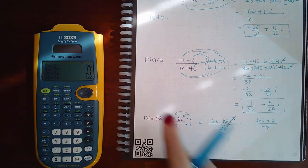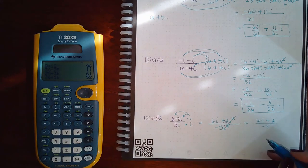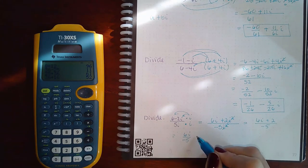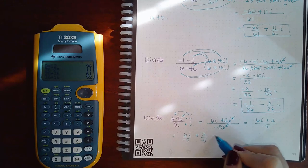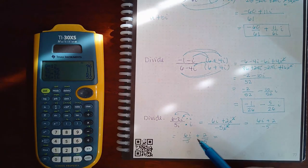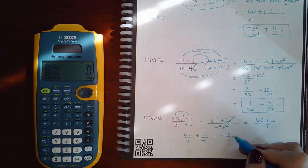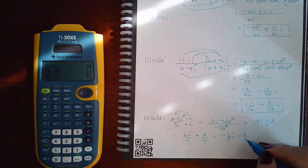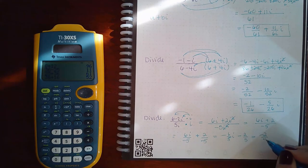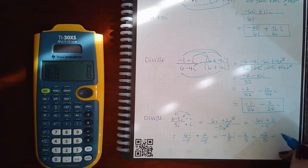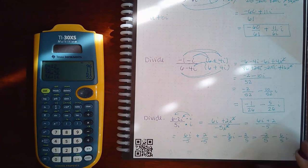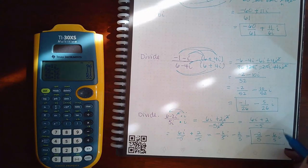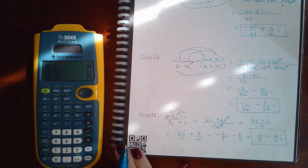So what I end up with is 6i plus 2 over negative 5. And we have to write it in that a plus bi form. So first thing I'm going to do is separate the fraction and then I'm going to clean it up. So I've got negative 6 over 5i. This sign is going to make negative 2 over 5. And then I want the real number negative 2 fifths in front and the imaginary negative 6 fifths in the back. And I always have the i on the side. So this is in the correct form.